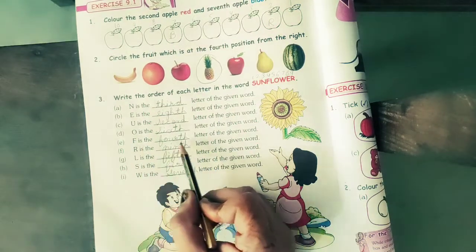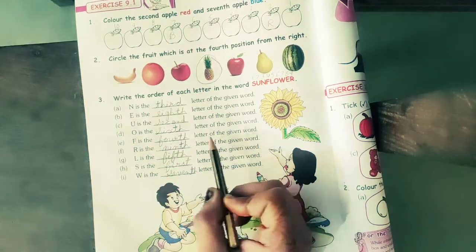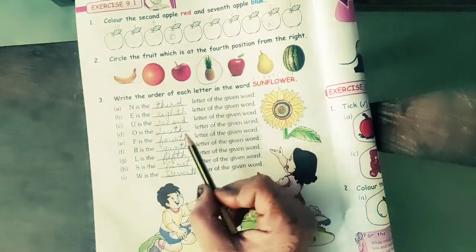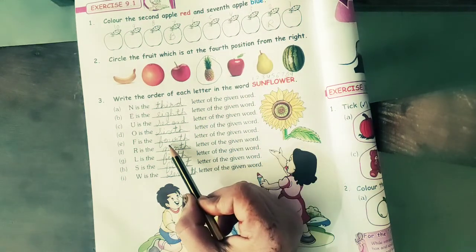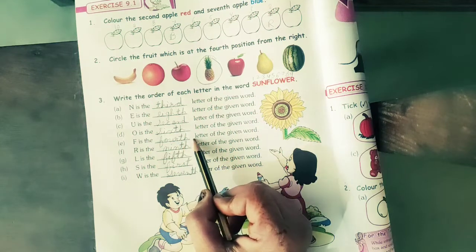F is the letter of the given word. F is at which number position? Fourth. You know the spelling of four: F, O, U, R, T, H, fourth.